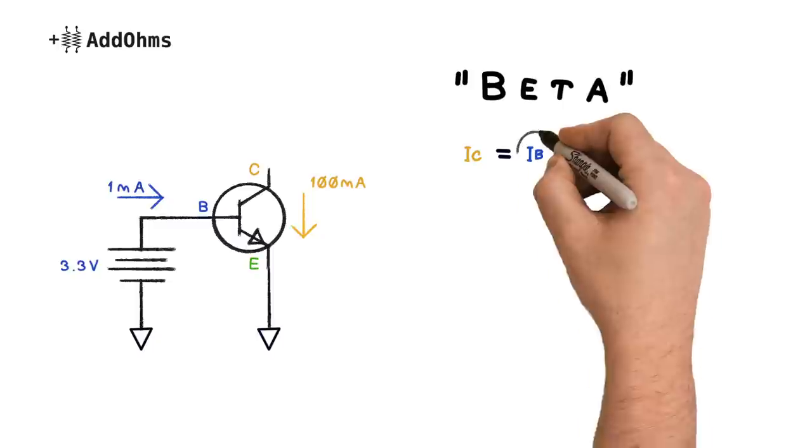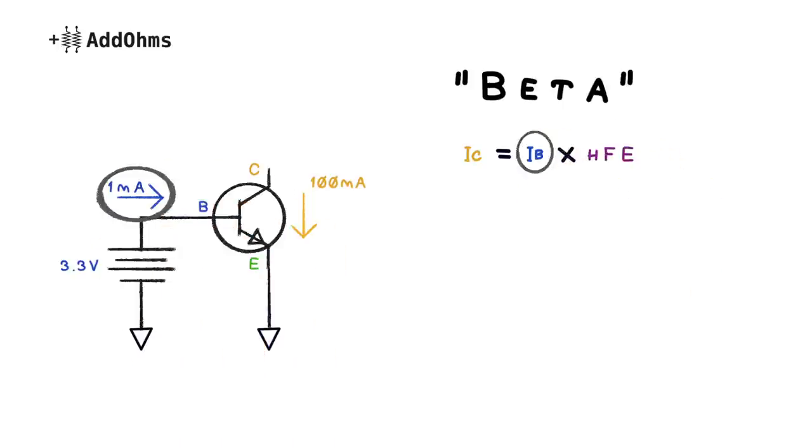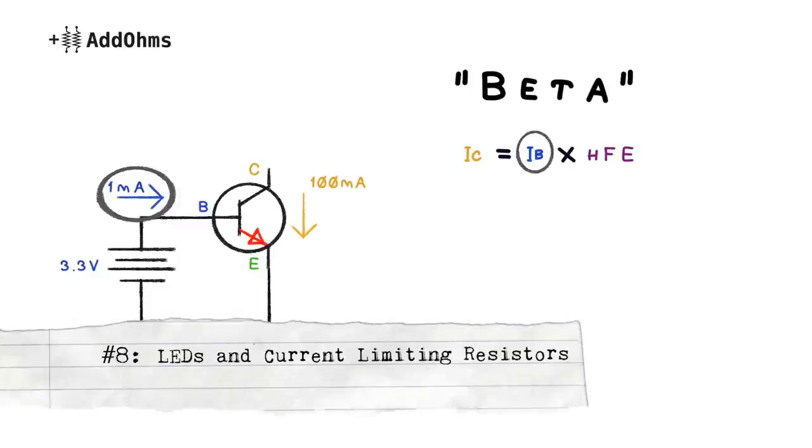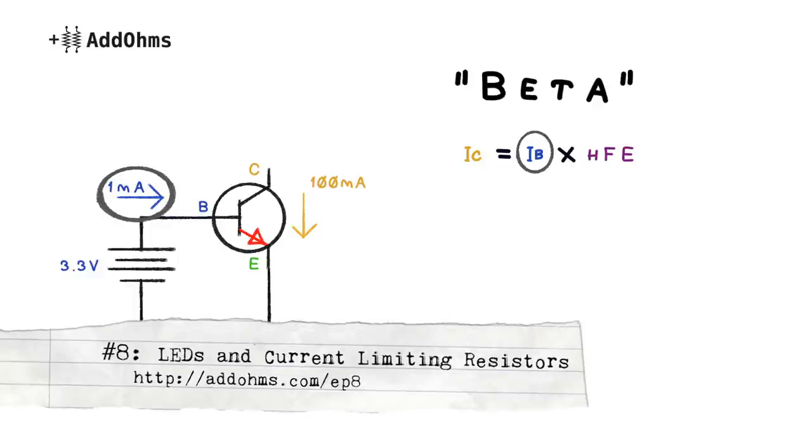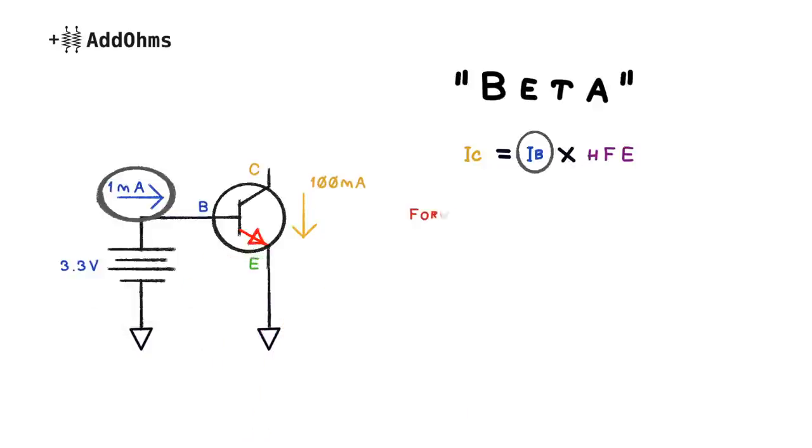So how do you know for sure what that base current will be? Well, you might have noticed there is a diode in the transistor's symbol. And that's what is actually inside of a transistor, a couple of diodes. Remember from video number 8, we learned that diodes need current limiting to work correctly. Since this is a standard diode, the forward voltage is about 0.7 volts.